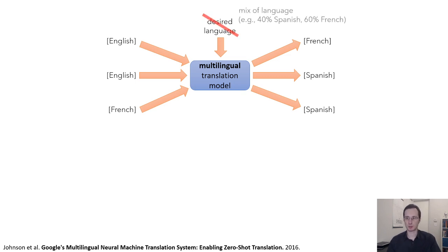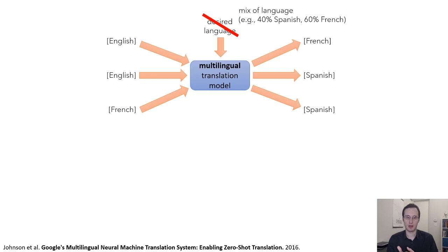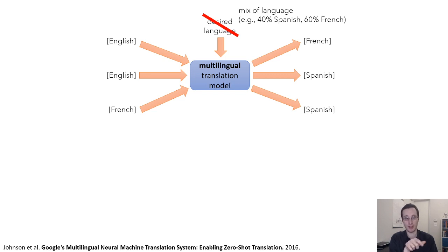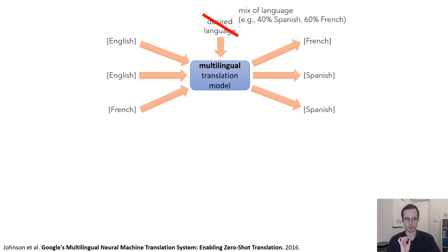Another interesting experiment was studying what happens when you ask the model to decode into a mix of languages. At a high level, when a model is conditioned on a categorical variable like a desired language, those variables are passed in as a collection of bits — typically zero or one — but you can set them to fractional values without changing the model. So you can ask the model to produce 40% Spanish and 60% French and see what it does with that. It's a weird experiment, but it gives insight into how the model is actually processing multilingual problems.